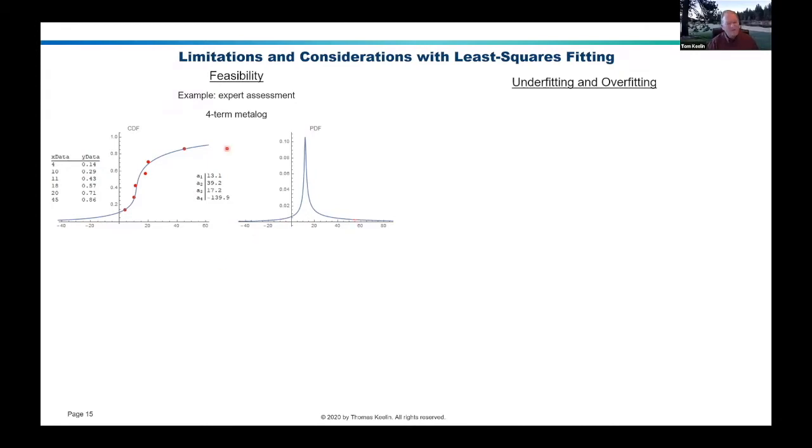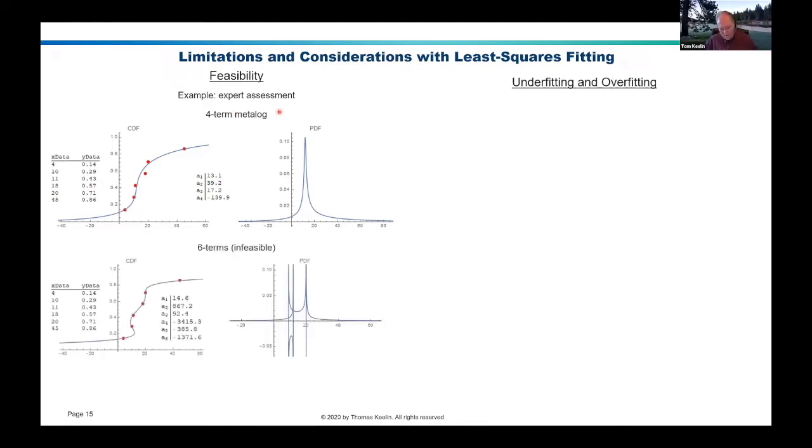But what if you, instead of using a four-term metalog, you tried to fit this data with a six-term metalog? Well, what do you got now? The good news is you've got a curve that goes through all of those data points exactly. The bad news is it's not even a probability distribution. The density function doesn't look like a density function at all. And it's not, it's certainly not something you'd want to use.